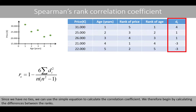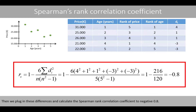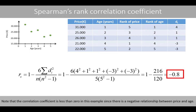Since we have no ties, we can use the simple equation to calculate the correlation coefficient. We therefore begin by calculating the differences within the ranks, then plug in these differences and calculate Spearman's rank correlation coefficient to negative 0.8. Note that the correlation coefficient is less than zero in this example, since there is a negative relationship between price and age.